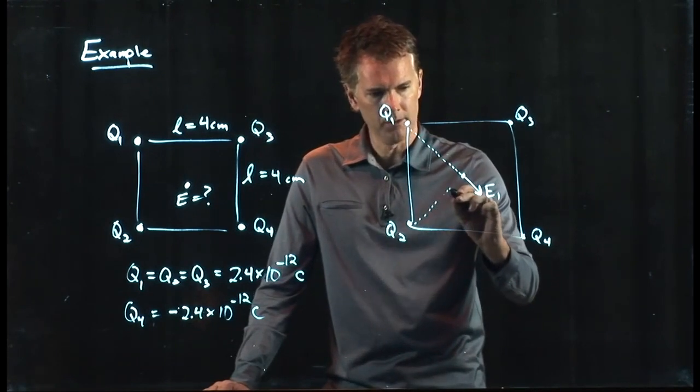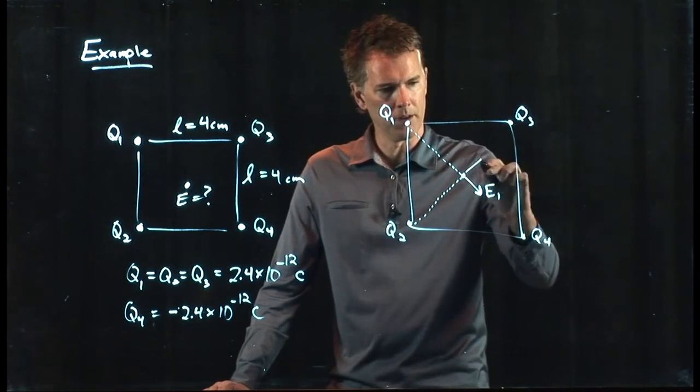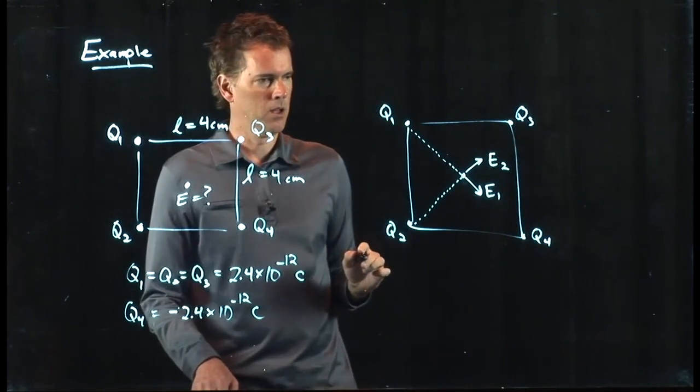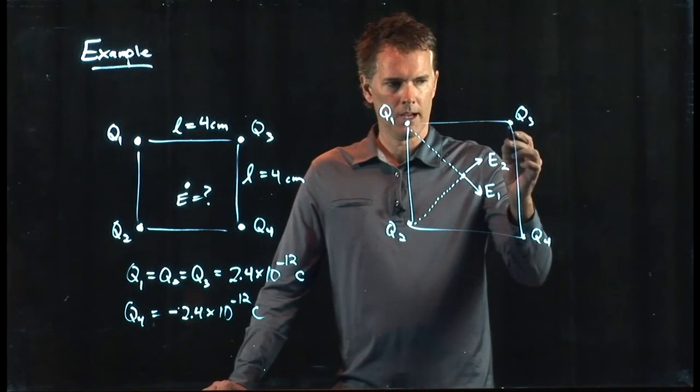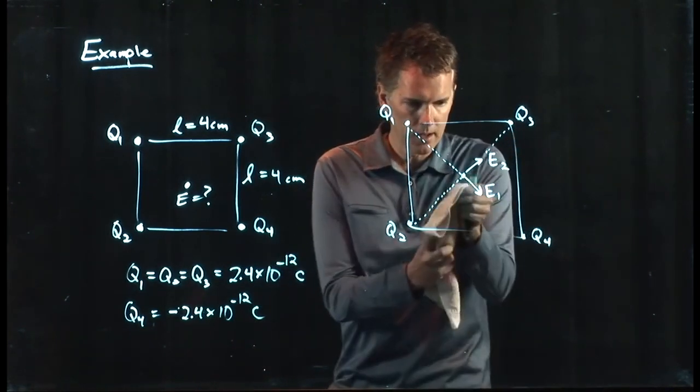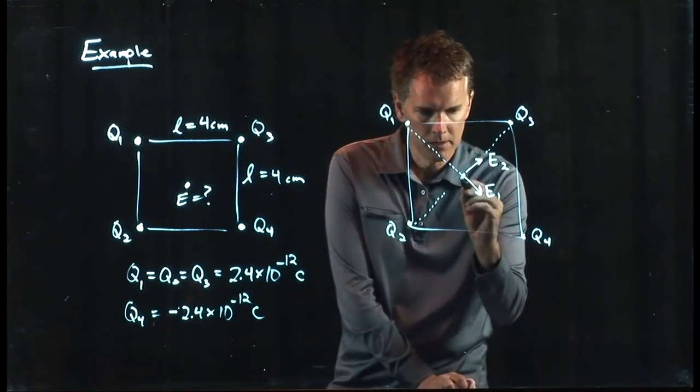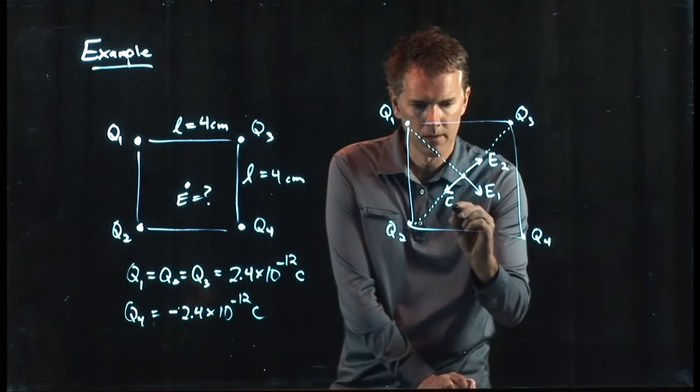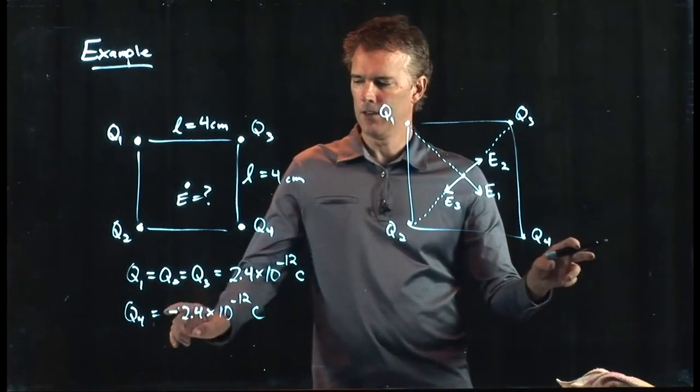q2 is also positive and the electric field from q2 is going to point that way, E2. q3 is also positive, and so the electric field from it is going to point radially away from it, so it's going to be right there.